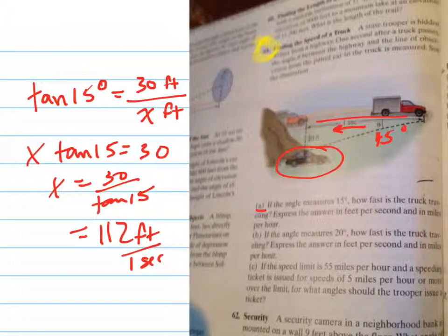Now what they're asking is how fast is the truck traveling? And they want it in feet per second. So it's 112 feet per second and then miles per hour. So to convert this to miles per hour, we're going to use some conversion factors from science class.